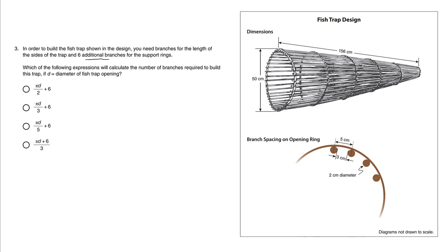We have one circle, two circles, three circles, four, five, six circles - these are support rings, they're circles. Which of the following expressions will calculate the number of branches required to build this trap if D equals diameter of fish trap opening?